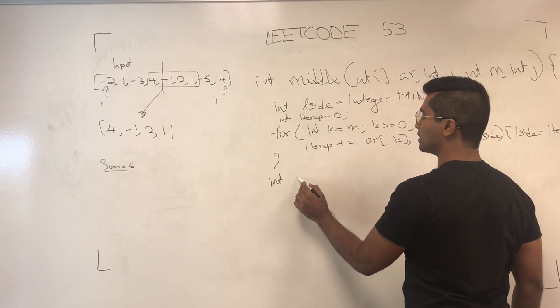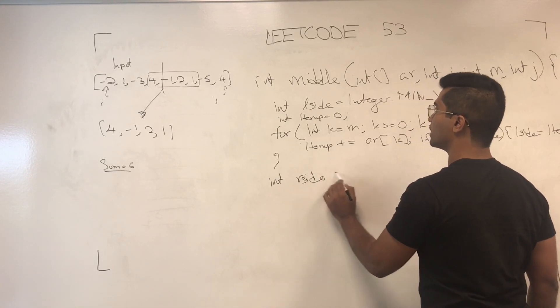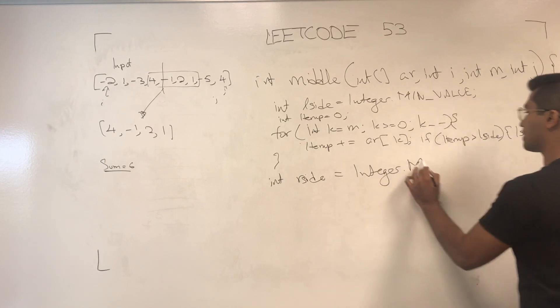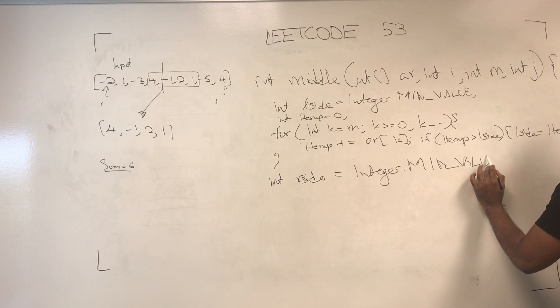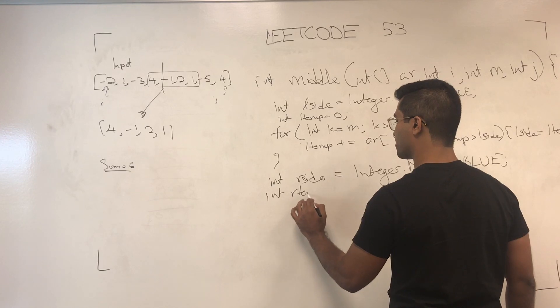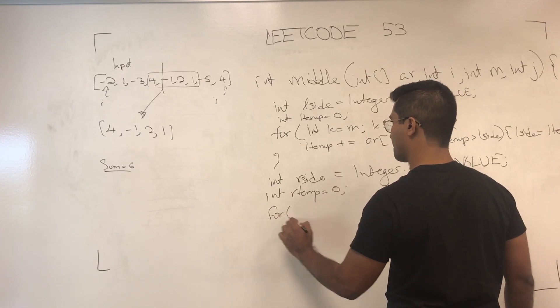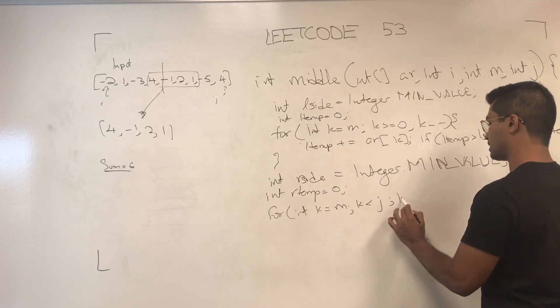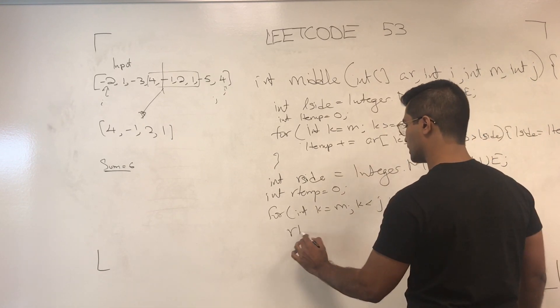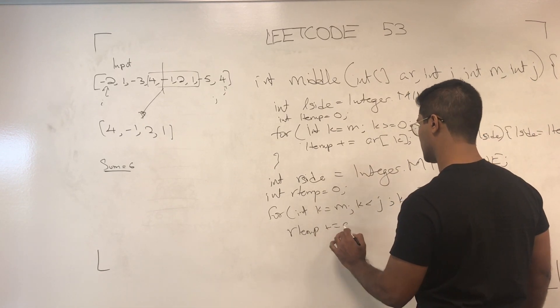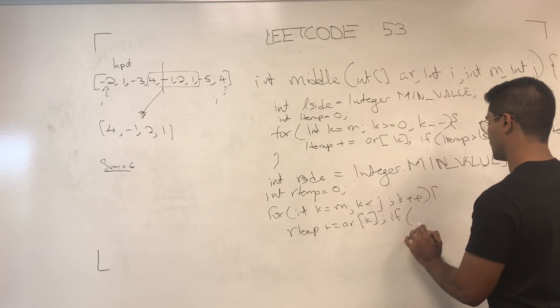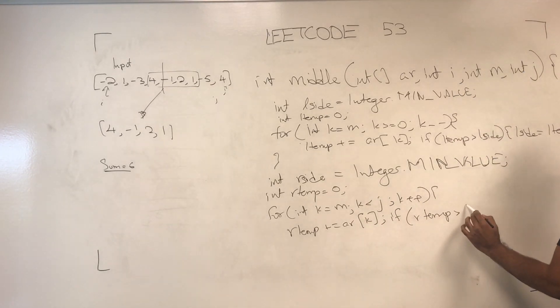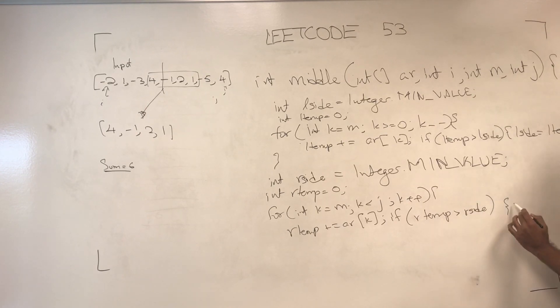Same thing we do for the right side. I'll just write it out quickly. K plus plus, r temp plus equals ar k. If r temp is greater than r side, then r side is set to r temp.